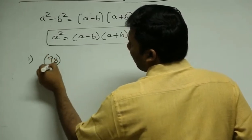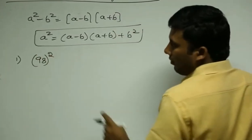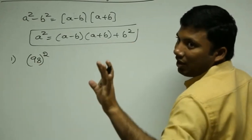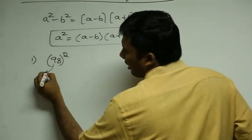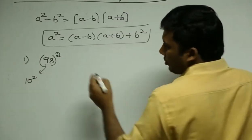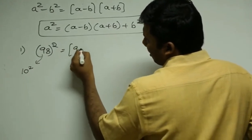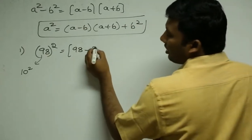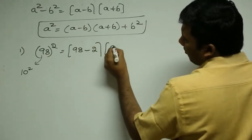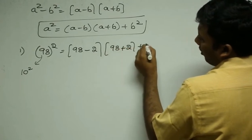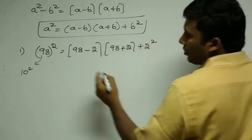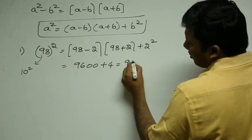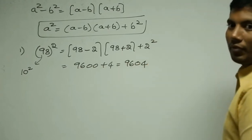Let's solve 98². Step one: the value of a is 98. Now, 98 is nearest to which power of 10? That's 100, so our base is 100. b is the difference between the number and the assumed base: 100 - 98 = 2. So: 98² = (98 - 2)(98 + 2) + 2² = 96 × 100 + 4 = 9604. Are you all with me?